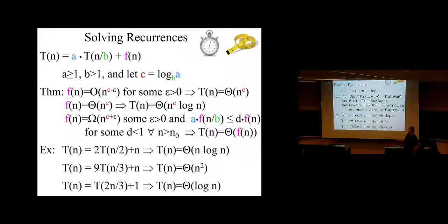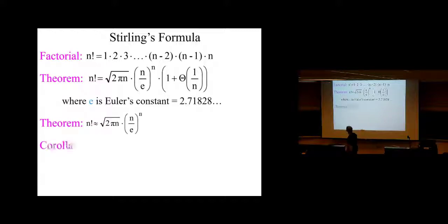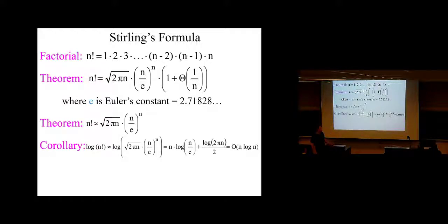We talked about solving recurrences. We didn't harp on that much. The proof for the master recurrence theorem is in the book. It comes in pretty handy when you have some tricky recurrences and you're trying to figure out what asymptotic growth rate they have. Stirling's formula approximation to the factorial is basically N over E to the N — that's the dominant term in factorial, asymptotically speaking.